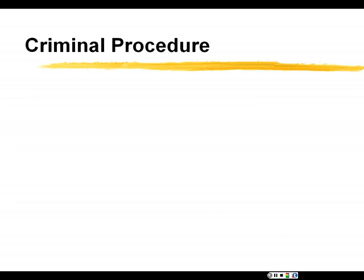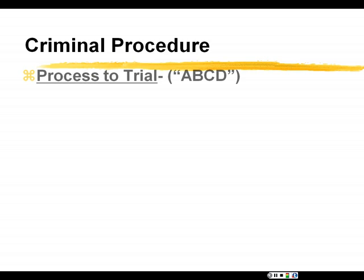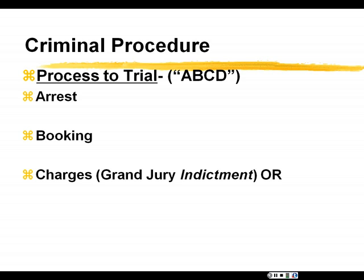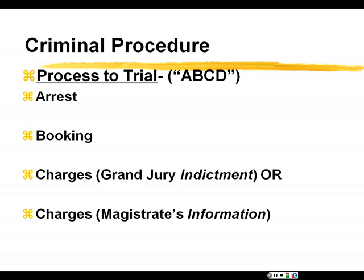Now we step into the area of criminal procedure. My law school professor might be a little fussy with me for boiling it down this way, but I'm really going to give you the nutshell version. The whole process of getting to trial goes A, B, C, D — it's a really easy way to memorize this. A is the arrest, B is booking, C are the charges — which can come in the form of a grand jury indictment, or in a less serious case as what's called a magistrate's information or a judge's information, an actual document. And D — I cheat a little bit here — is the defendant's arraignment.